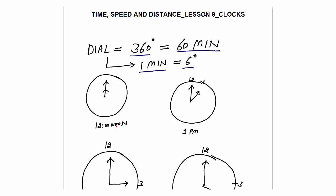At 12 noon the angle between the hour hand and the minute hand is 0 degrees. We always have to take the shorter angle — whenever we say 'angle' in clock problems, we will always take the angle that is less than or equal to 180 degrees. That is the angle we are going to take.